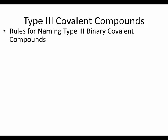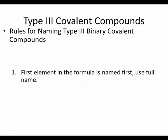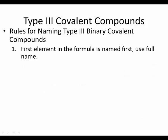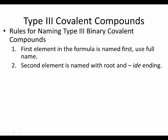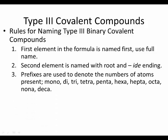The rule for naming the Type 3 binary covalent compound: the first element in the formula is named first — use the full name, which is similar to how Type 1 worked. The second element is named with the root and the -ide ending, same as ionics. But here's the difference: because we could have more than one oxygen — like carbon monoxide and carbon dioxide — or more than one of the nonmetal, we have to use prefixes.